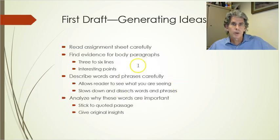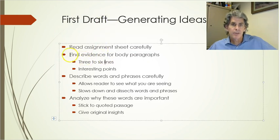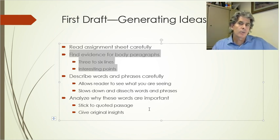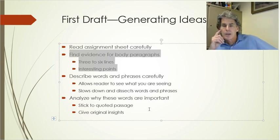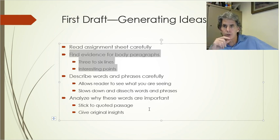Let me walk you through these general principles. First, read the assignment sheet carefully — which we just did. Second, read Antigone carefully — you've all done that. Third, find the evidence for the body paragraphs. Now that might be a little odd for some of you, because many of you come up with a thesis and then find the evidence. I want to reverse that process entirely. I want you to put your thesis aside and find the evidence you want first.